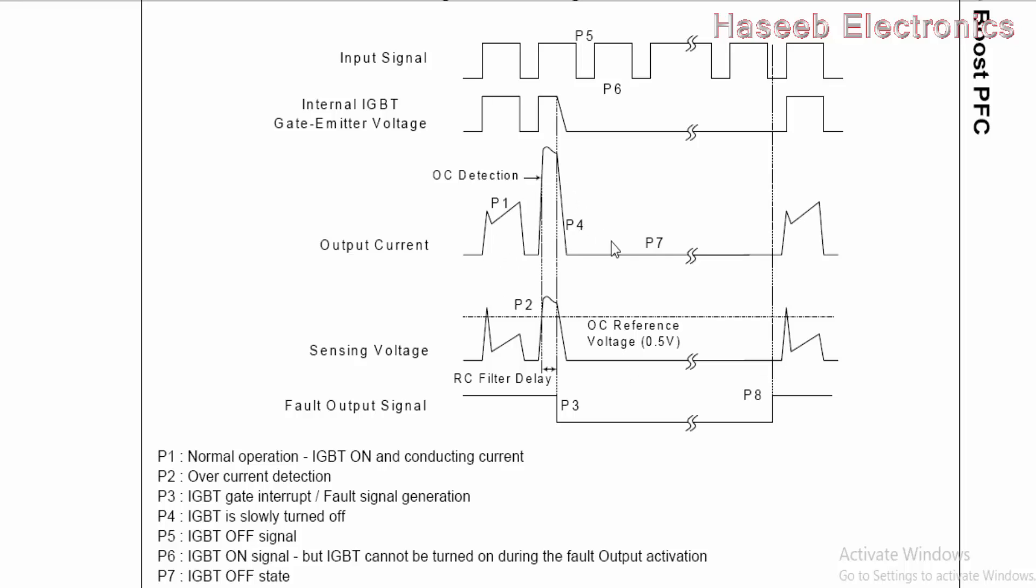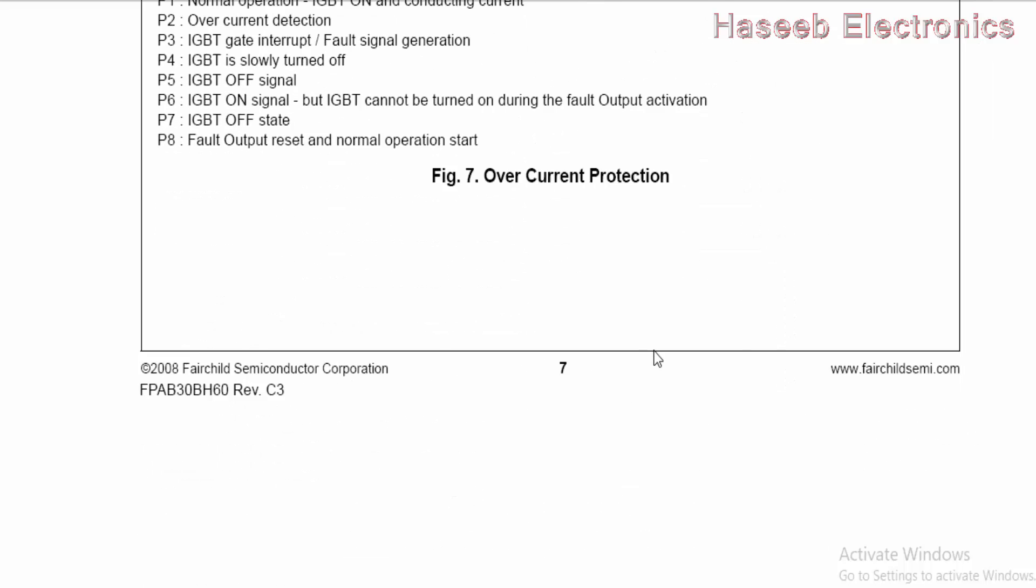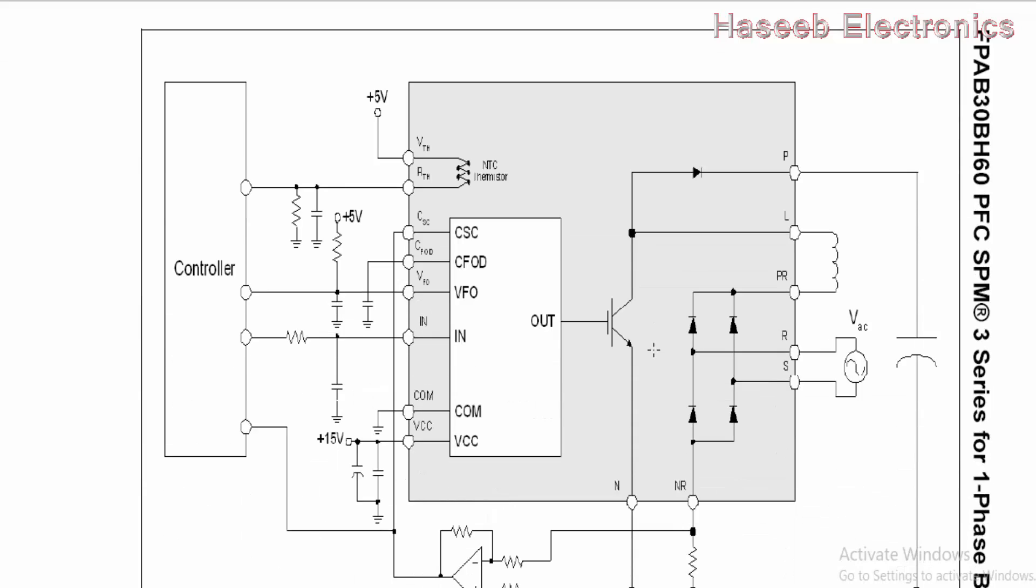And output current will stop. PFC output will stop. IGBT will stop. When the output detection circuit will become low. In that case, it will start switching again. And we will take PFC current output and we will take output in the circuit. So, this is its working phenomena and it is working like this.